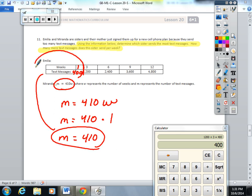So Amelia is the daughter that's texting less. Miranda is the one that's texting more. And she's texting 10 more text messages per week. I hope this gives you an insight on the things we were hoping you would learn from Lesson 20.